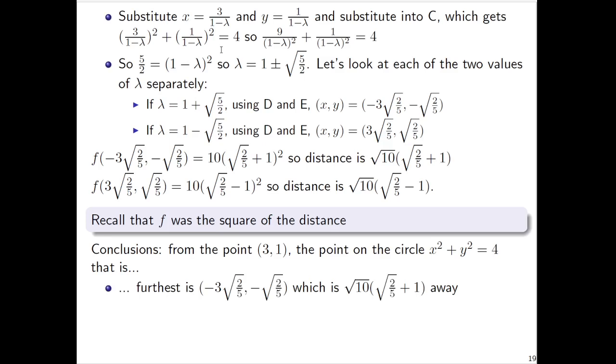This one, (-3√(2/5), -√(2/5)), that's the furthest point because that's the bigger value of distance here with the plus sign.